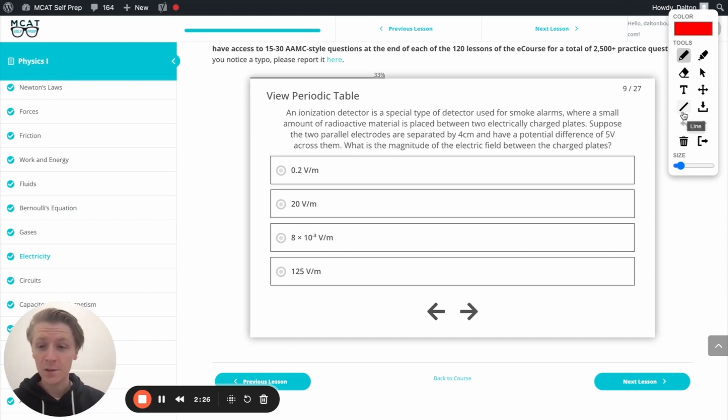All right, so we already talked about the equation we need to know, which is the magnitude of the electric field equals voltage divided by distance. Great. Now, what I'm seeing here is my voltage is five. That's not going to be too bad at all. I've got a five on top, that's a nice number. Now, problem is, my distance is in centimeters, but all my answer options are in meters. So I'm clearly going to want to find a way to change centimeters to meters.